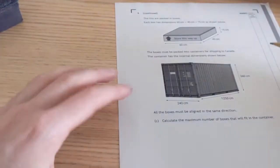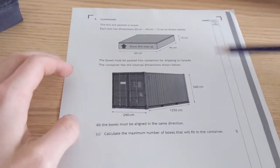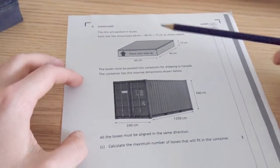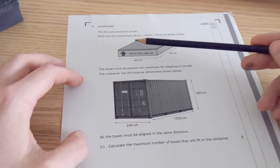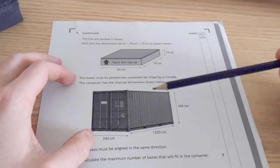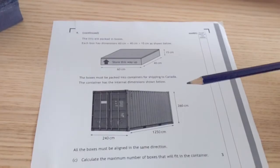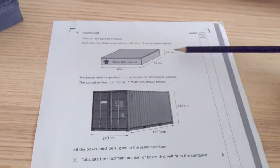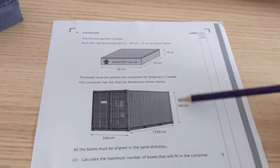I'm going to look at an exam question now. The exam questions are a little bit different than the one before because it's got this bit that's really important and it says store this way up. So the boxes have to be stacked in a certain way with one side. In this case, the 15 centimeters have to go alongside the 260.